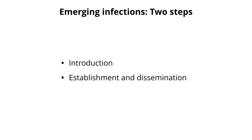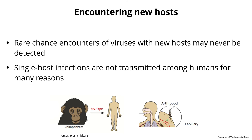There are two broad steps in establishing an emerging infection. First, the virus has to be introduced into a new host — it's existing somewhere in a natural stable cycle, but then it has to go to another host through many possible ways. Then it has to be established and spread. Most of the viruses that will come into people — new ones we haven't seen before — are probably existing in animals around the world, and these are chance encounters.